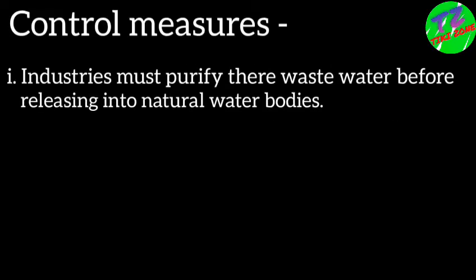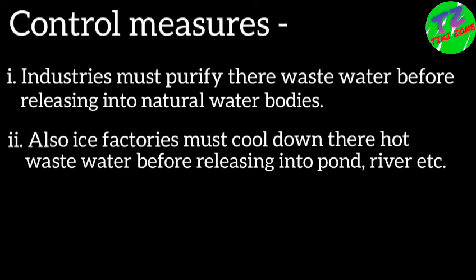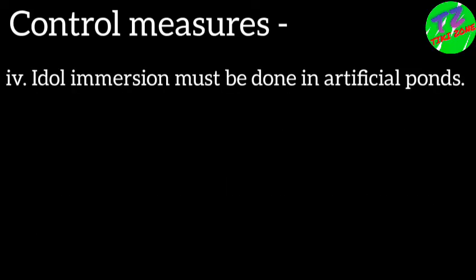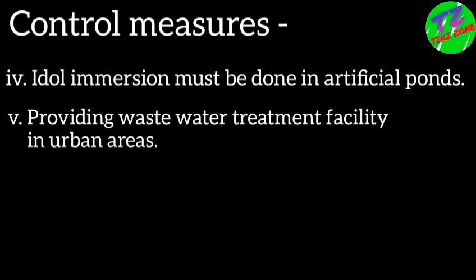Now let us discuss the controlling measures of water pollution. Industries must purify their wastewater before releasing it into natural water bodies. Factories must cool down their hot wastewater before releasing it into ponds, rivers, etc. Humans must avoid throwing litter into rivers, ponds, etc. Idol immersion must be done in artificial ponds.